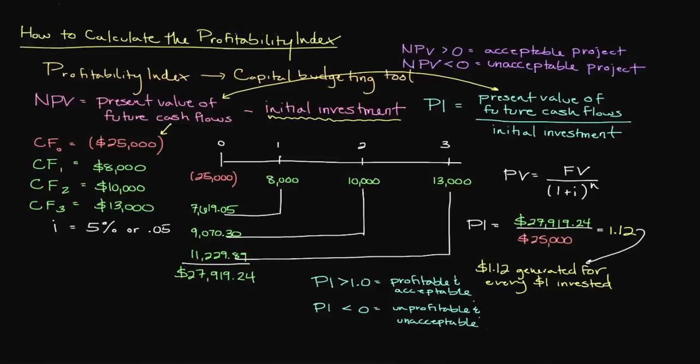A project that produces a profitability index of less than 1 indicates that the present value of future cash flows generated by the project is less than the investment needed to generate those cash flows. In short, we're throwing good money after bad.